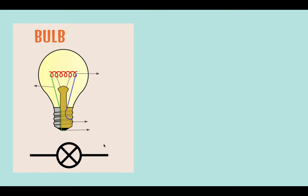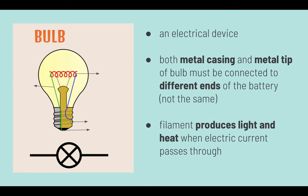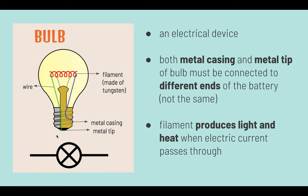Next, we'll be looking at the bulb. A bulb is an electrical device which is used to emit light. A bulb consists of a filament which is used to produce light and heat, a metal tip and a metal casing, and lastly, a wire to connect the filament to the metal casing and metal tip.